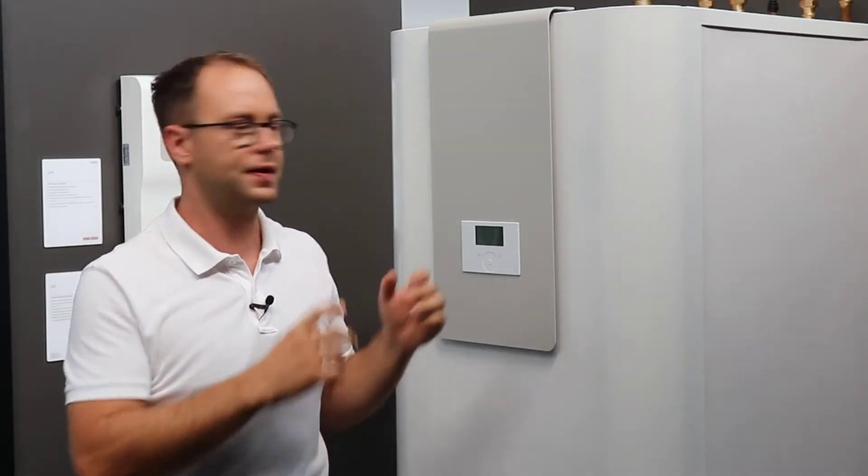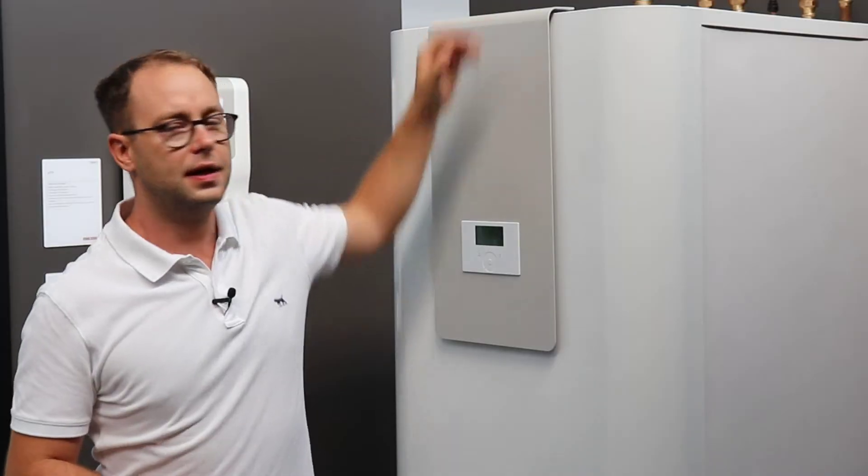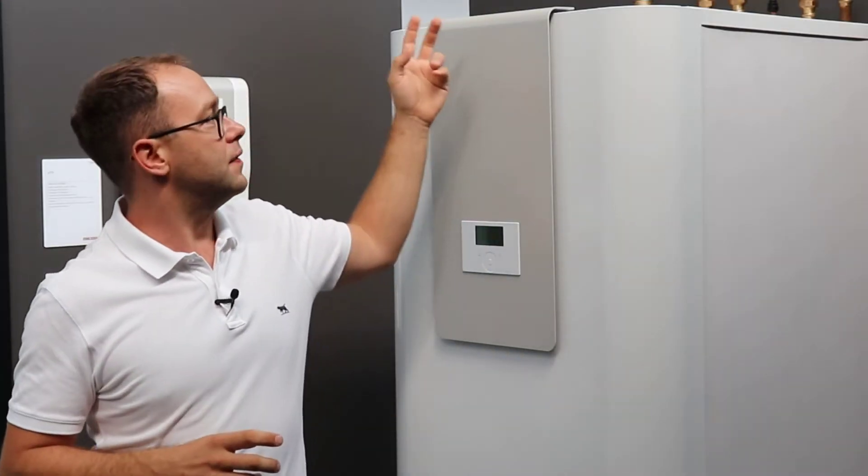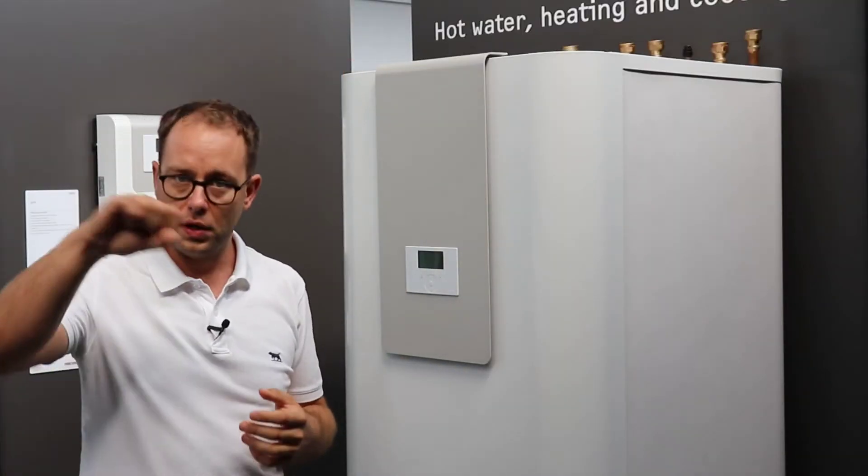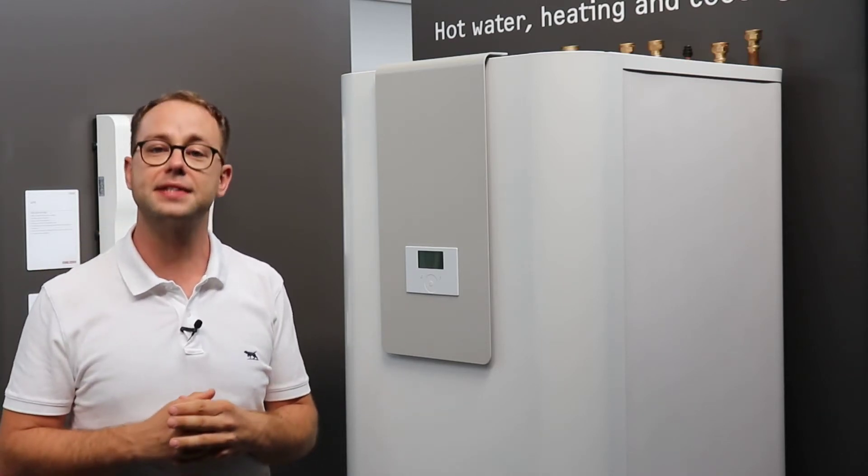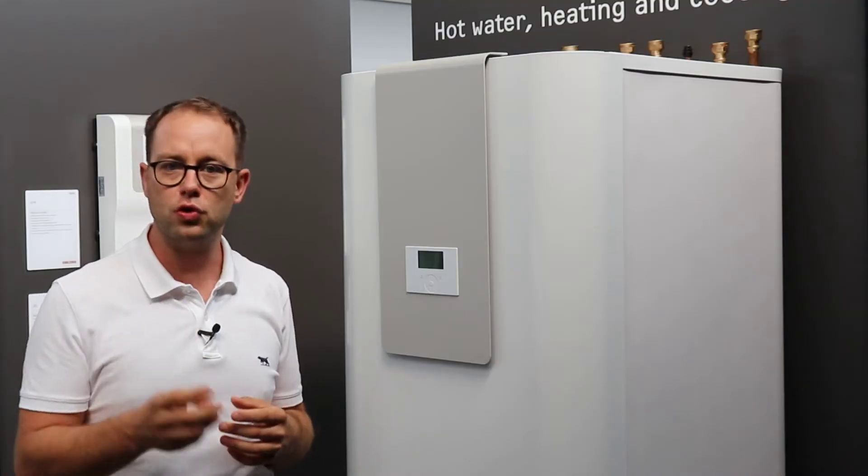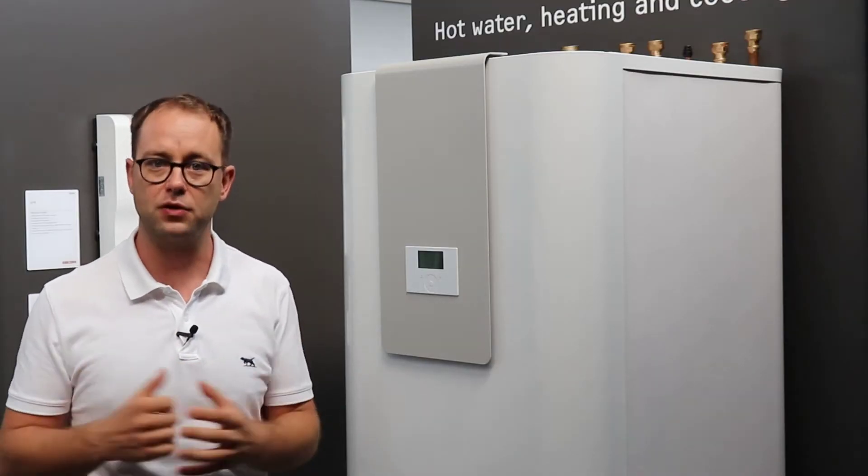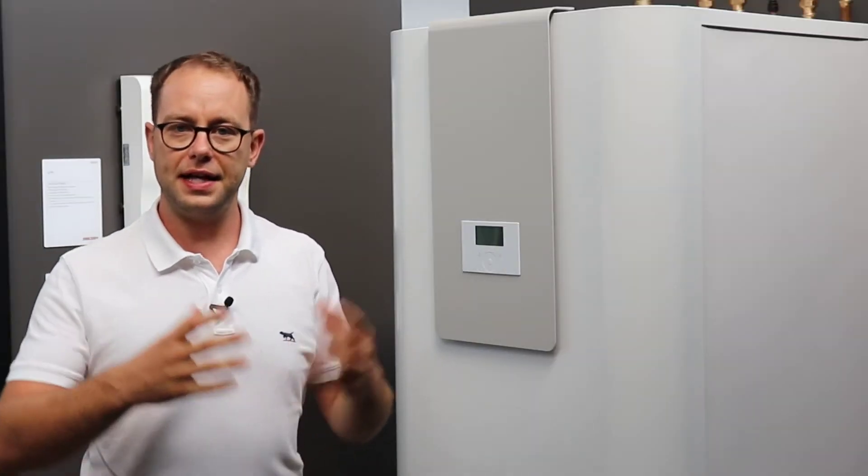What happens is you have your heat pump outside and that's connected with two pipes and a couple of cables back to this unit. Then there's two pipes, one for your cold water coming in and one for your tap hot water out, so that's for your showers and your sinks and everything. And then there's either two or four pipes for your heating and cooling circuits and that's all that's required.